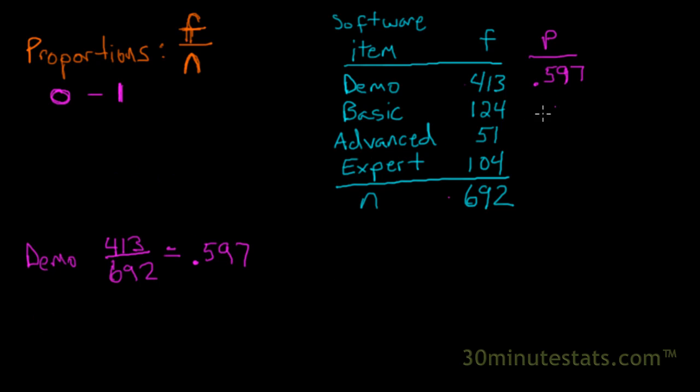Now we can do the proportion for the basic, and that is going to be 124 divided by 692, which gives us a proportion equal to 0.179. We can add this to our table, 0.179.